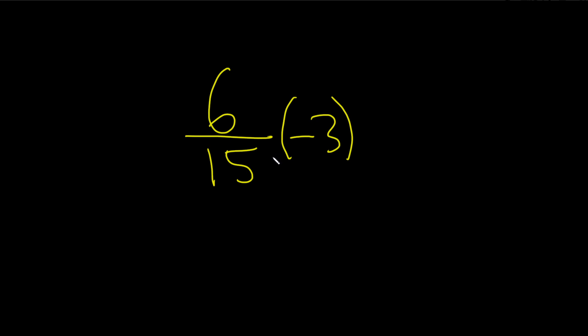So what we can do to make this a little bit easier to understand is you can write negative 3 in a better way. So let's keep this 6 over 15 and let's go ahead and put the dot there for multiplication and write this as negative 3 over 1.